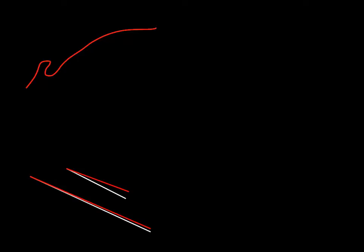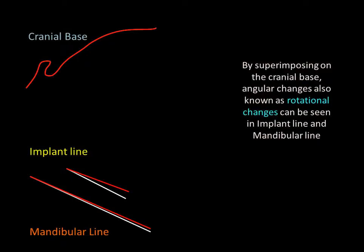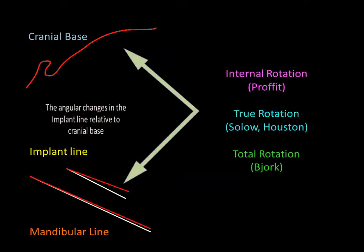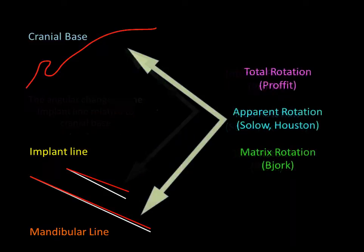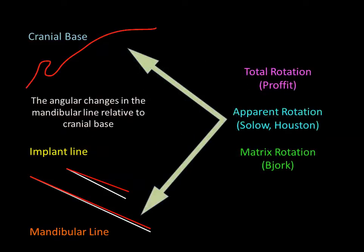By superimposing on the cranial base, angular changes — also known as rotational changes — can be seen in the implant line and mandibular line relative to the cranial base. The angular changes in the implant line relative to the cranial base has been called internal rotation by Prophet, true rotation by Solow and Houston, and total rotation by Bjork. The angular changes in the mandibular line related to the cranial base has been called total rotation by Prophet, apparent rotation by Solow and Houston, and matrix rotation by Bjork.